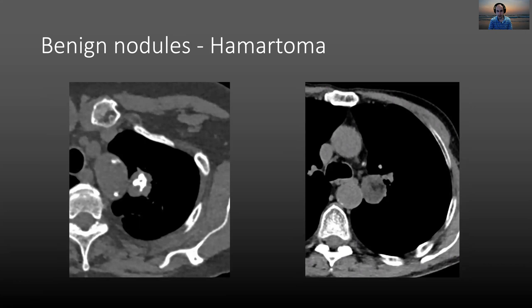Hamartomas can be characteristically benign. If you see characteristic popcorn-like calcification in a nodule, like in this case, or macroscopic fat in a nodule like in this case here, you can be pretty confident it is a hamartoma and does not require further follow-up. Most hamartomas do not have these characteristic findings, but if you do see them, you can be confident about the diagnosis. You should not be measuring the attenuation of a nodule to see if it has fat — you have to be able to see macroscopic fat with your eyes, as you can easily be misled by necrosis or other fluid-containing things that are low in attenuation but are not truly fat.